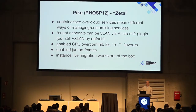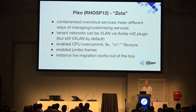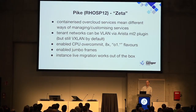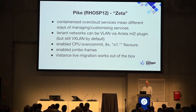Having jumped from version 8 to version 12, other cloud services were by and large containerised — different ways to manage, debug, and customise them. One thing we implemented was tenant networks as VLANs rather than encapsulated VXLAN, using the Arista ML2 plugin. We're still mostly using provider networks, which I'll talk about shortly. We also turned on CPU overcommit with host aggregates, so users can choose between guaranteed resources or overcommitted resources. They really like knowing exactly what to expect.